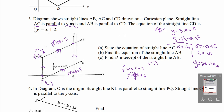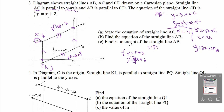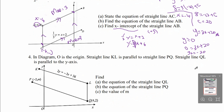Part C: find the X-intercept of the straight line AB. X-intercept is when Y equals to 0. Using the equation of AB: 0 equals to 3X plus 20, so 3X equals to negative 20, giving X equals to negative 20 over 3. This is the X-intercept of the straight line AB.